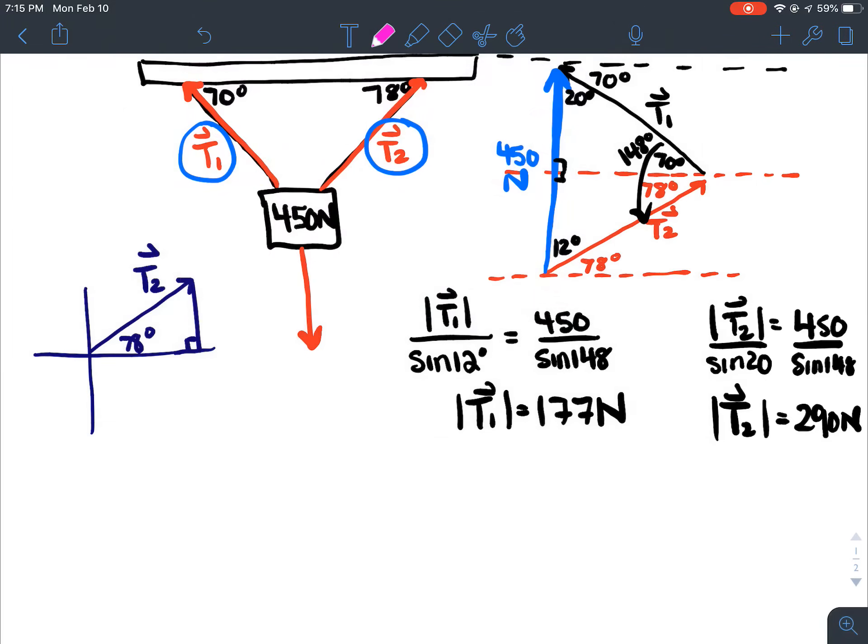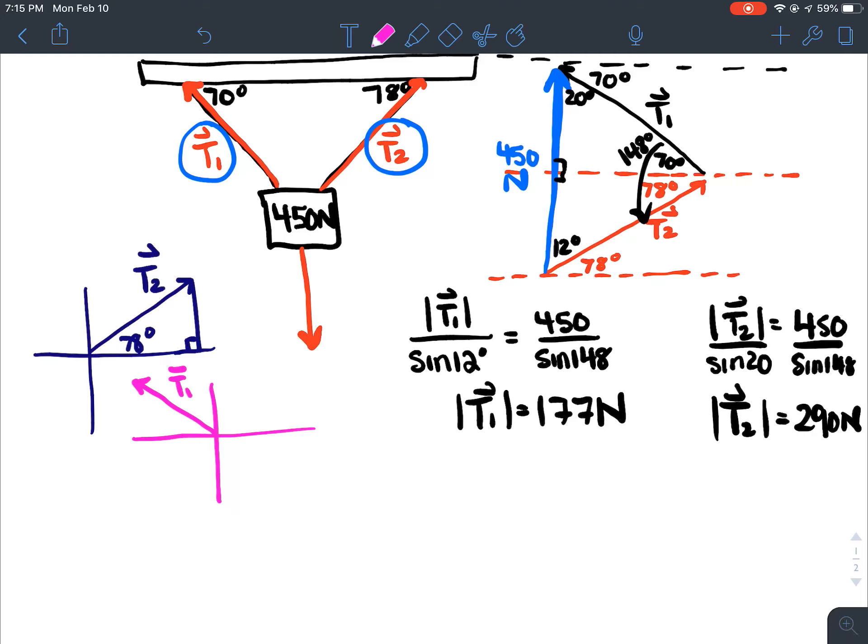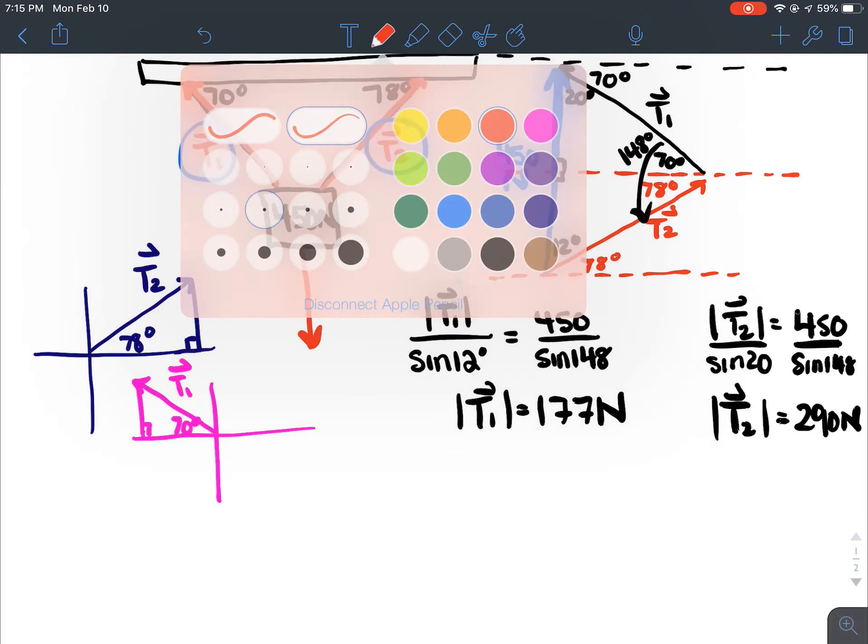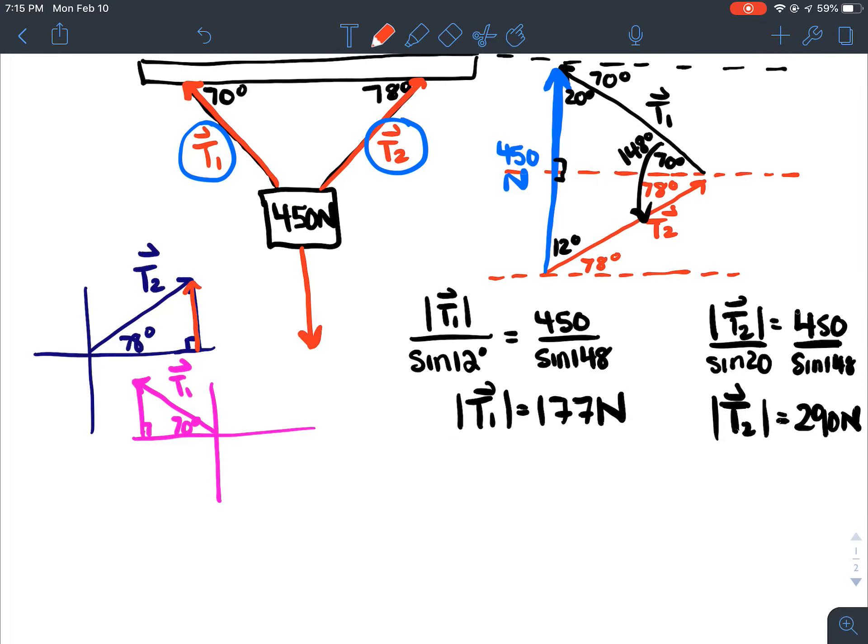I'll call that T2. And then you also have T1, which is at an angle of 70. So you have to set it up so that your two vertical tensions, your two vertical components...